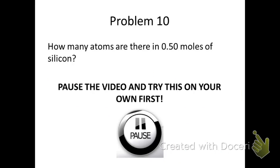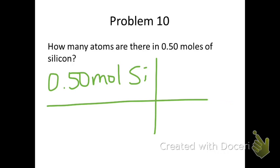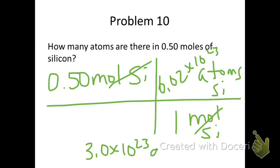Last problem — read the question, pause the video, try it, and then resume to check your answer. In number 10 we are trying to convert 0.5 moles of silicon to atoms. Start with 0.5 moles of silicon. Moles of silicon go in the denominator. 1 mole of silicon equals 6.02 times 10 to the 23rd atoms of silicon. Multiply the top, divide by the bottom, and you get 3.0 times 10 to the 23rd atoms of silicon.